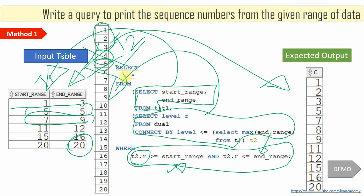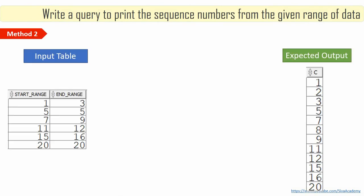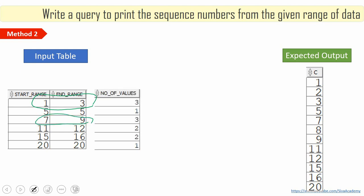Now let me show you the second method of implementation, which is a little different. First, I compute the number of values within each boundary range. For example, within 1 and 3 there are three numbers; from 5 to 5 there is one number; 7 to 9 has three numbers. This is computed as end_range - start_range + 1. For example, 3 - 1 + 1 = 3 elements.